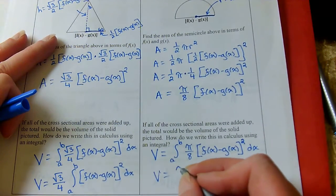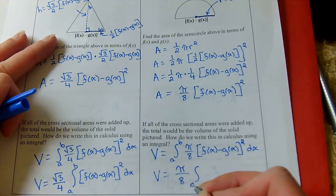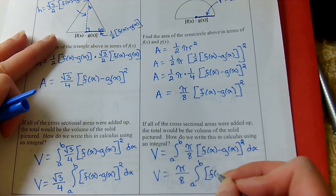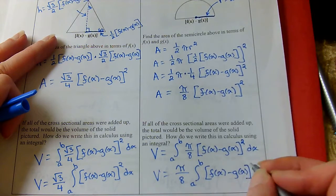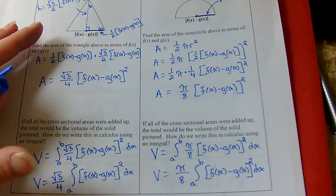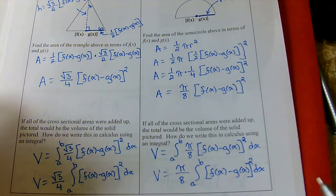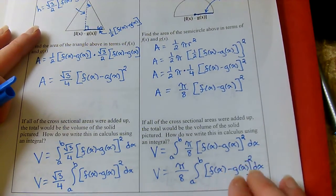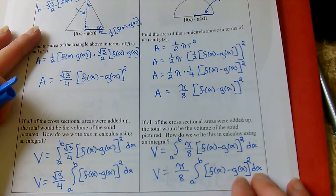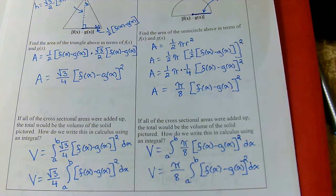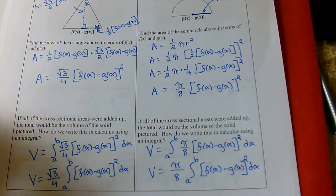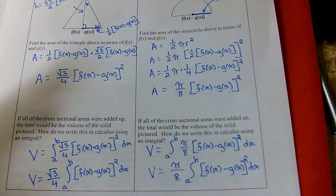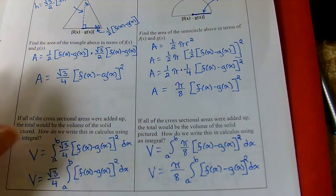Are you noticing anything that's the same every single time? Every single one of these has somewhere in them f of x minus g of x squared times dx. It's just the coefficient is different depending on what figure we have. I tend to still break it down into what figure I have, but if we have this handy while working on homework, we can use this as a guide.